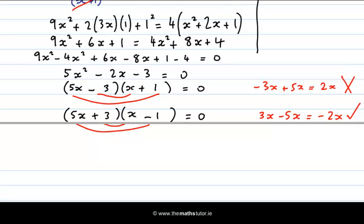I now make each factor equal to 0. So I get 5x plus 3 equal to 0, and I get x minus 1 equal to 0.